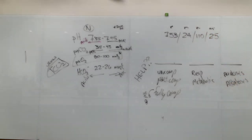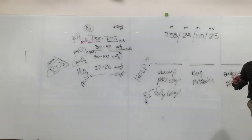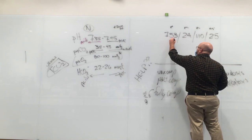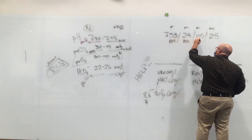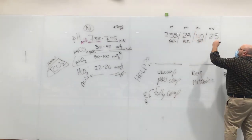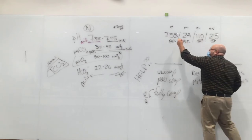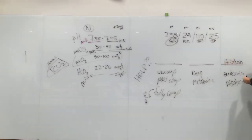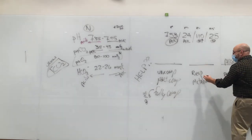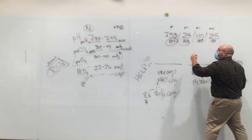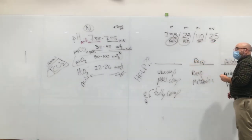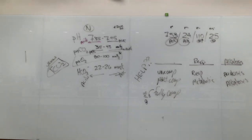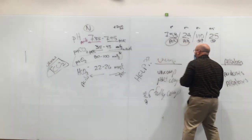Second example: 7.53 / 24 / 110 / 25. Go through it methodically. The pH is alkalosis. CO2 of 24 is alkalosis. PaO2 is normal to high — we don't know the FiO2. Bicarb is normal. So pH gives us alkalosis. Respiratory matches because CO2 is also alkalotic. No compensation from the other side — uncompensated respiratory alkalosis.